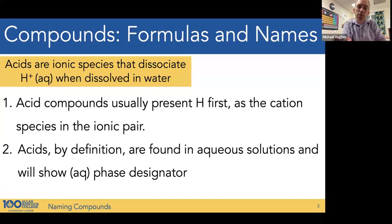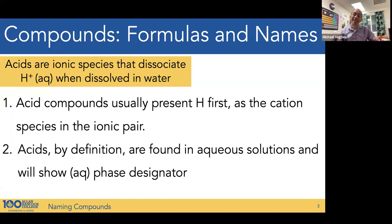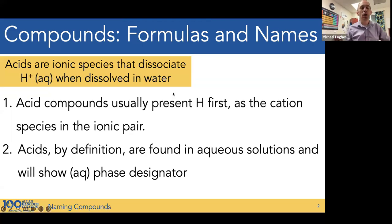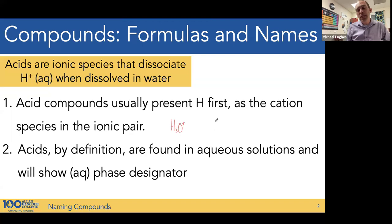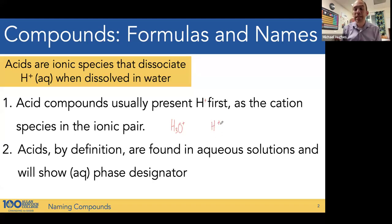Acids are ionic species which dissociate an H+ when dissolved in water, either completely or somewhat. To identify an acid when naming species, an acid is an ionic compound that presents H first as the cation. The acid actually transports as hydronium H3O+, but we will see it on the acid molecule simply as H+, as the proton.